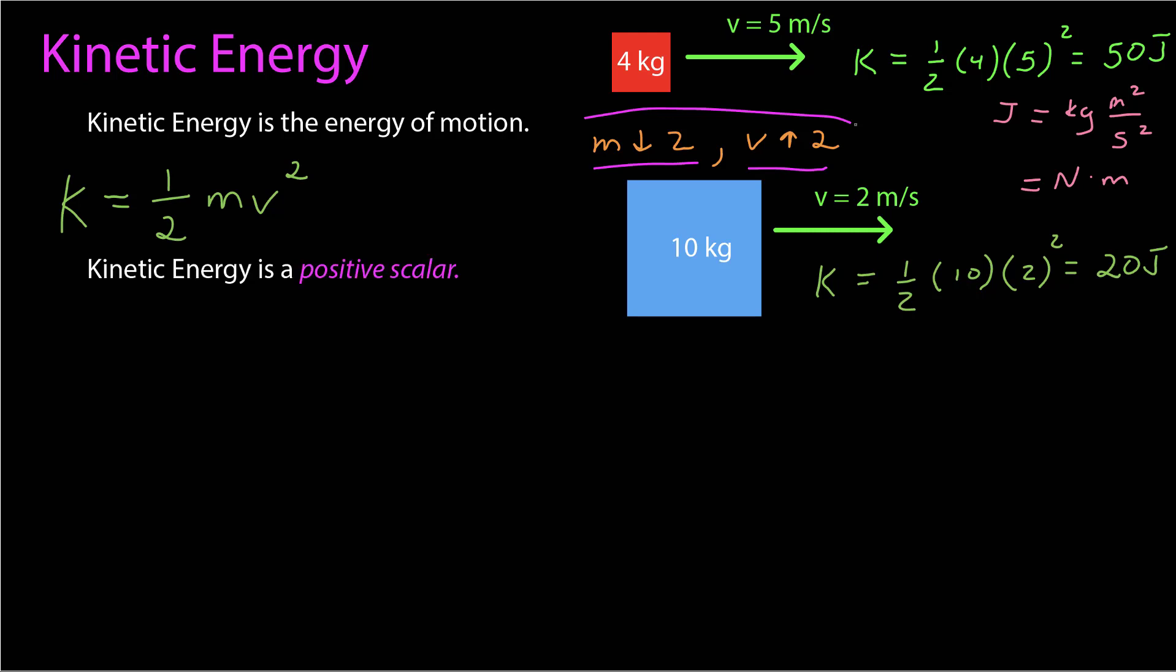A couple more things about kinetic energy. Kinetic energy is a positive scalar. So it's a scalar, mass is a scalar, and speed is a scalar. That's a magnitude of the velocity. It's also always positive. Mass is positive, and again, you have speed squared. So if you ever end up with a negative kinetic energy, you know you've calculated something wrong.